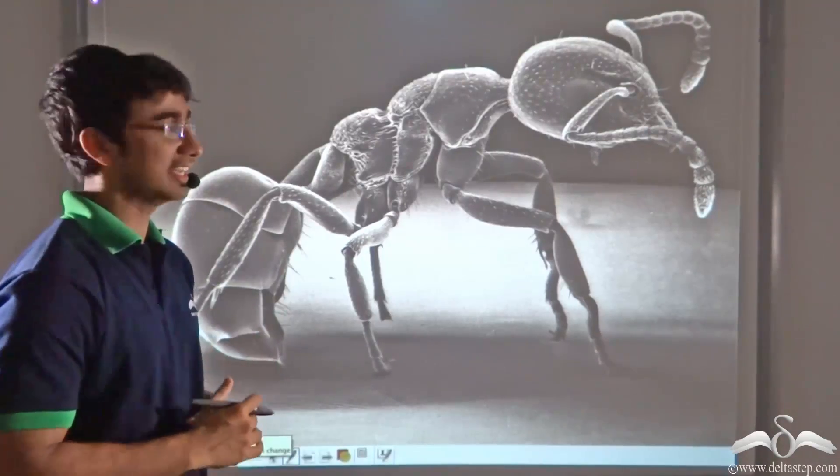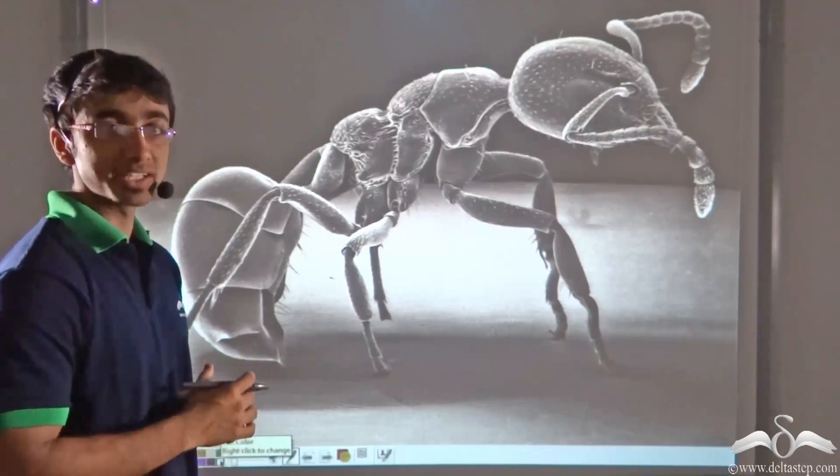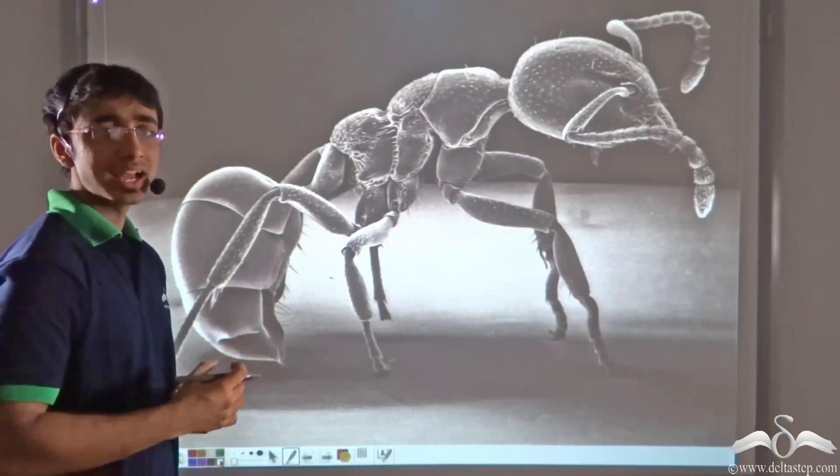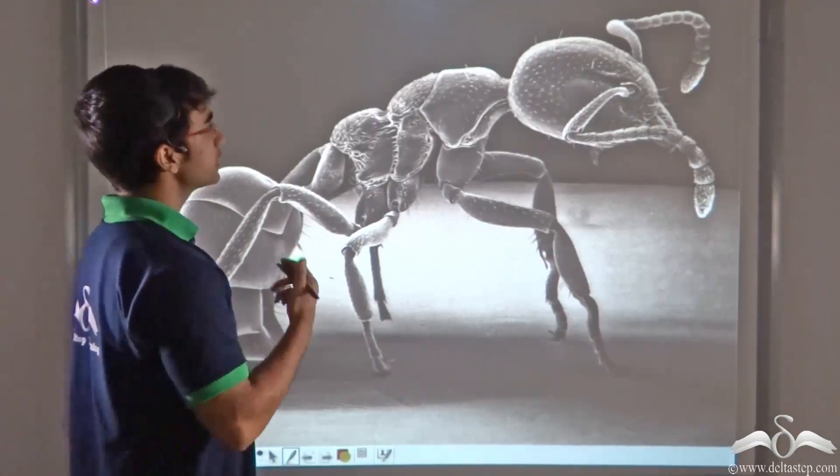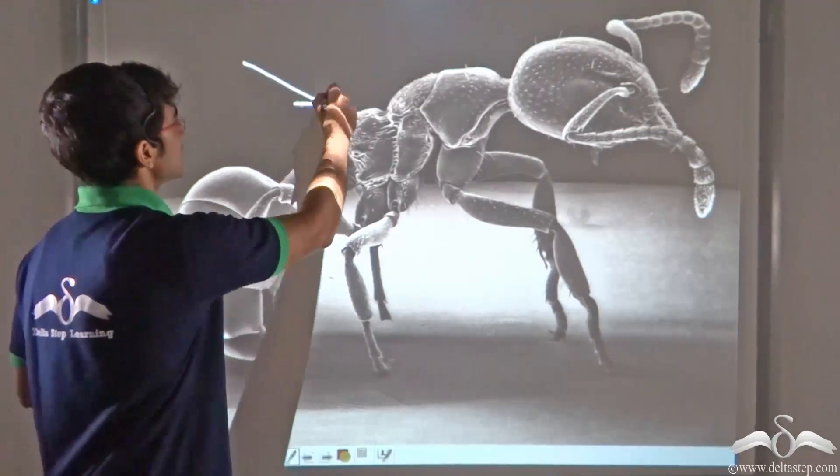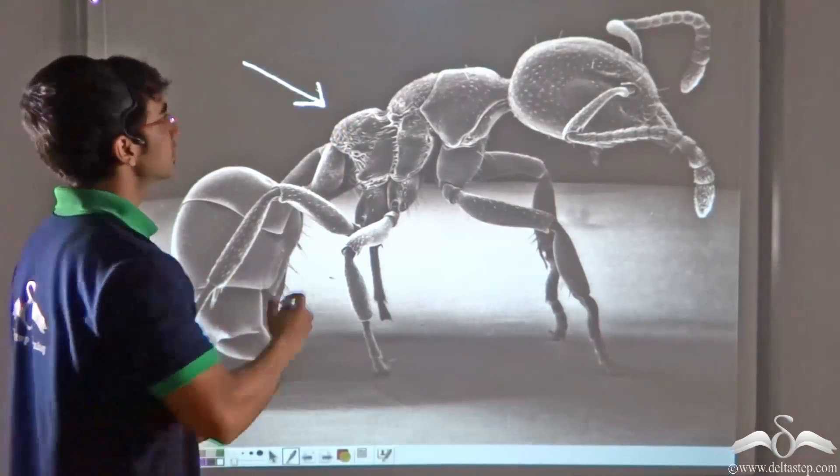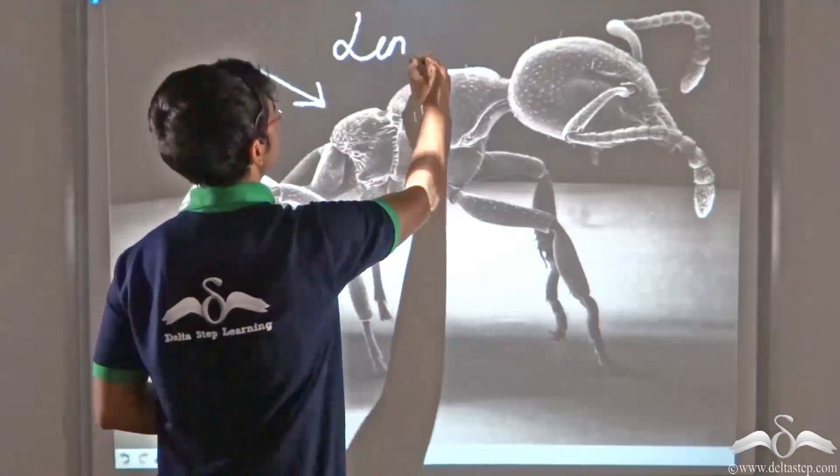Let me surprise you by saying that this is actually the picture of an ant, the small ant that you find at your home and in so many places around the world. So how do you think we were able to obtain such a large picture of this ant? The answer to that again is lens.